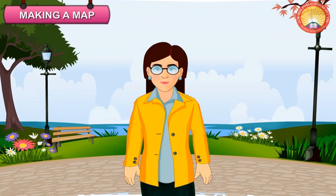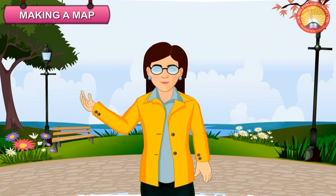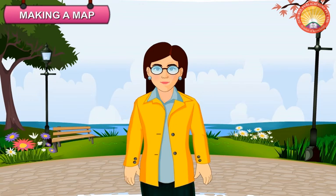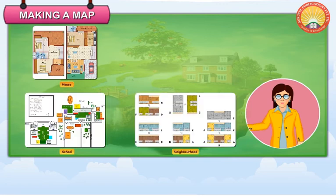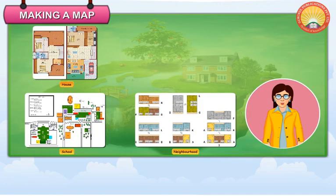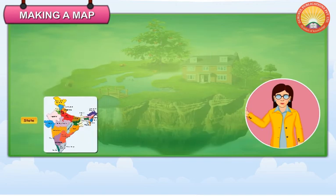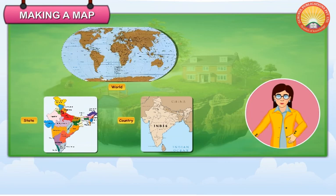Making a map. A map is a drawing of a place on a flat surface. Maps are of different types, like that of a house, school, neighborhood, city, state, country, or the world. Maps help us to locate places in a small area. Look at the map of a house.